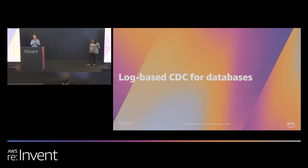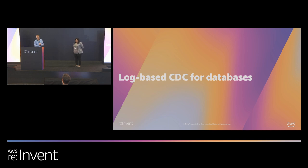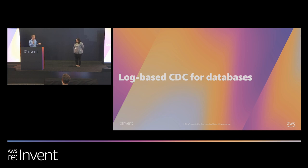These customers probably have lots of data residing in on-premises data sources, databases, and they would want to use the most efficient way to get the data onto AWS. How can they make sure that they don't lose any changes? What's the best approach to get the data onto AWS?